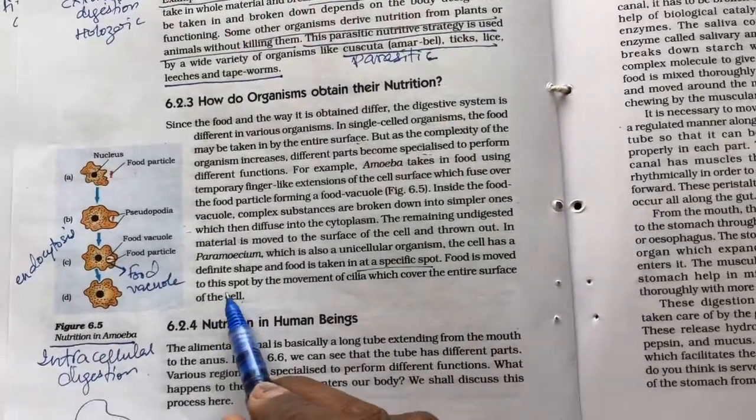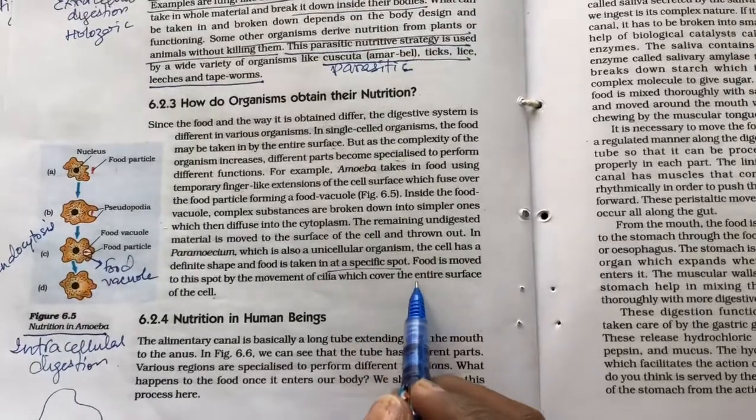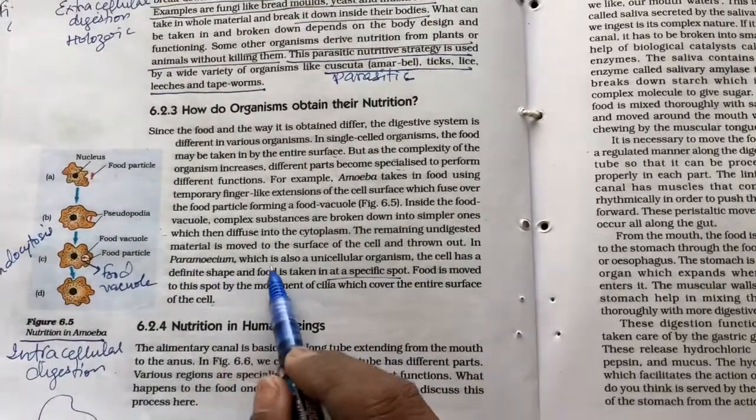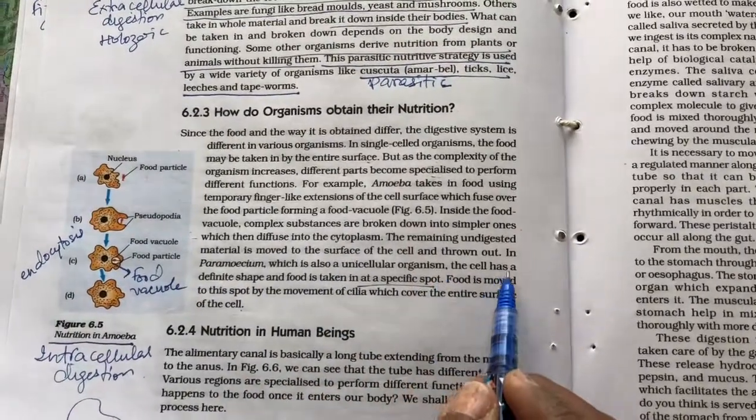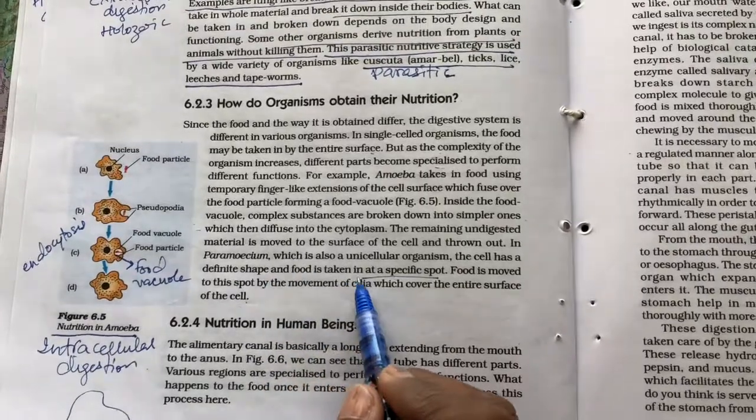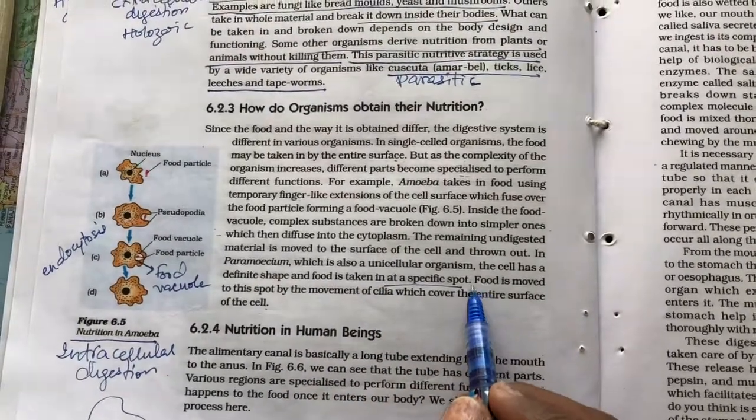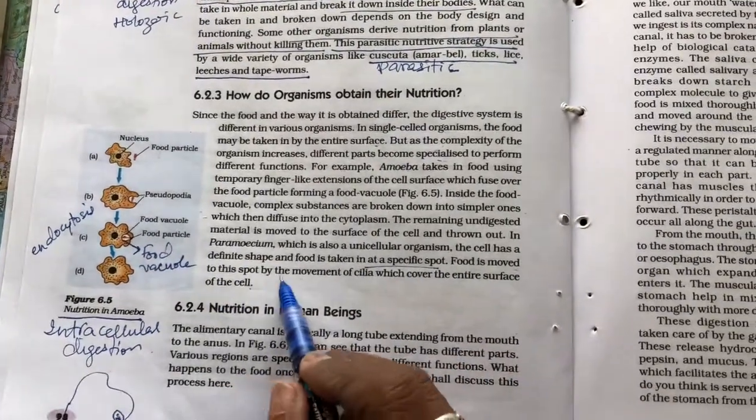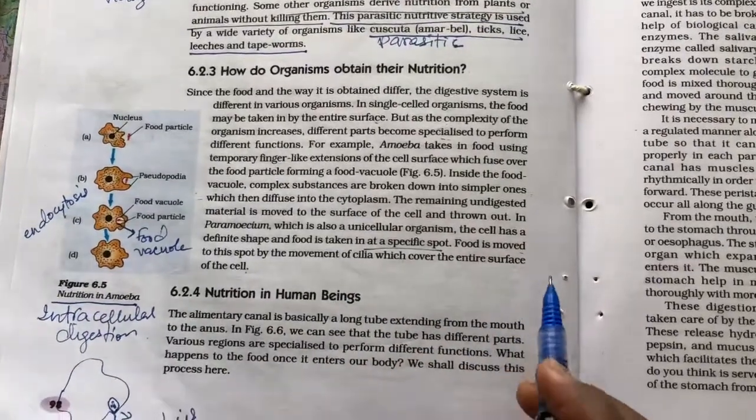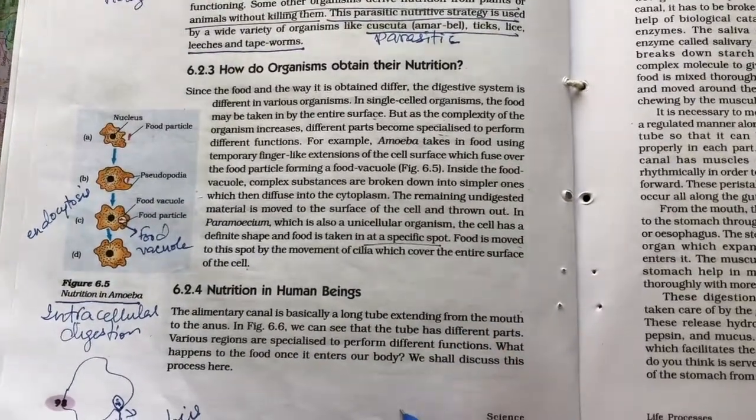In paramecium which is also a unicellular organism, the cell has a definite shape and the food is taken in at a specific point. Food is moved to this part by the movement of cilia which covers the entire surface. Let us see how it happens in paramecium.